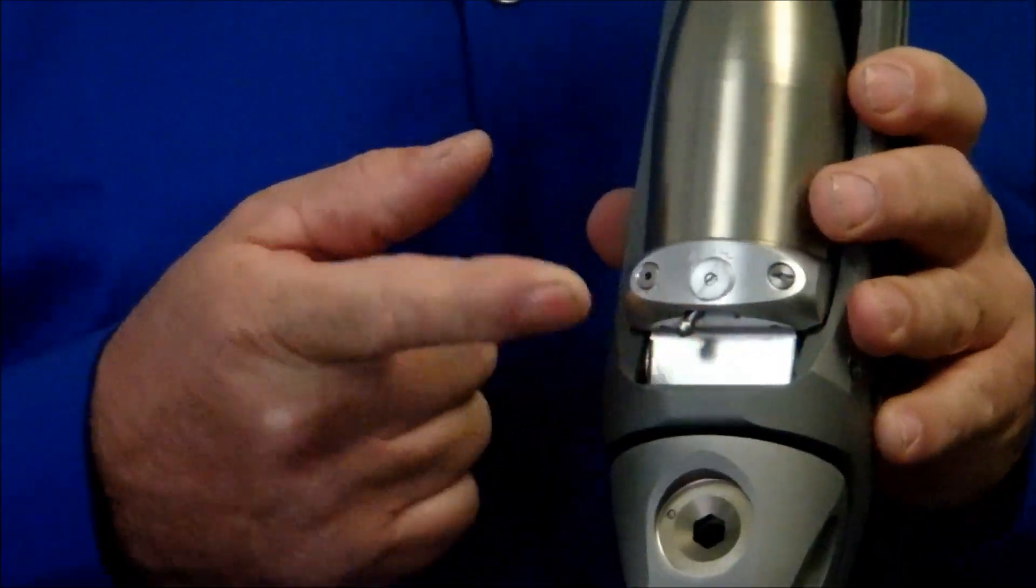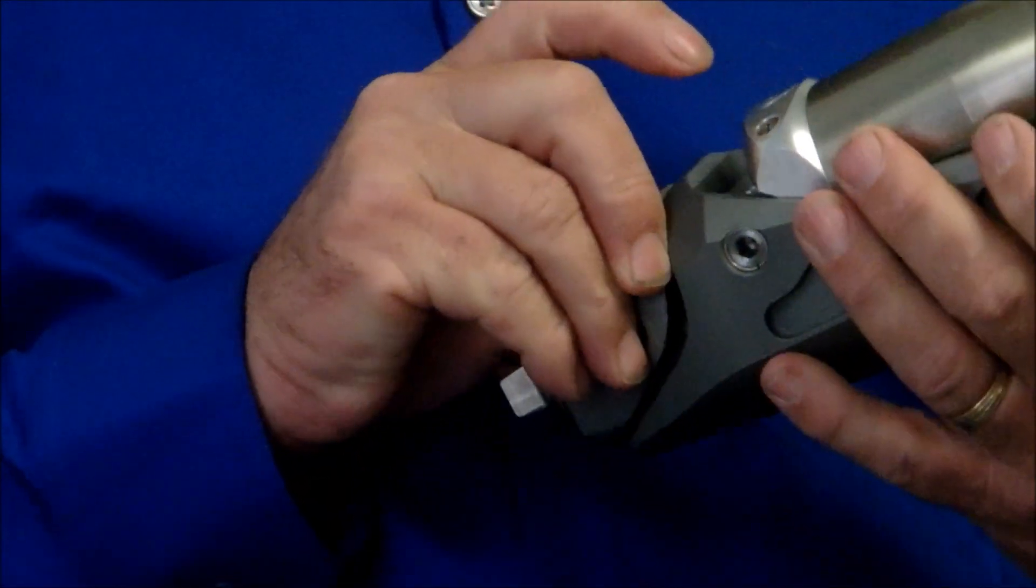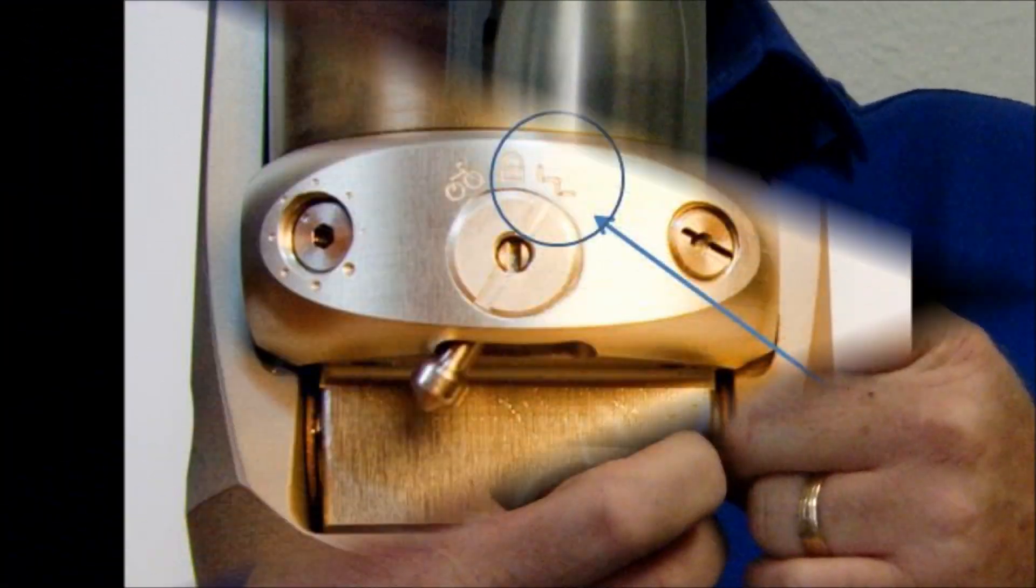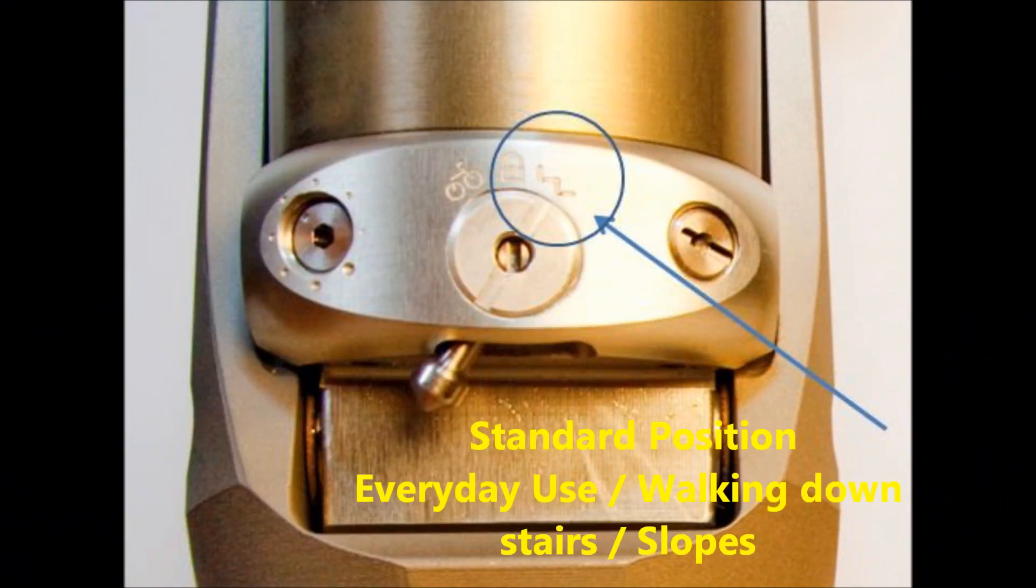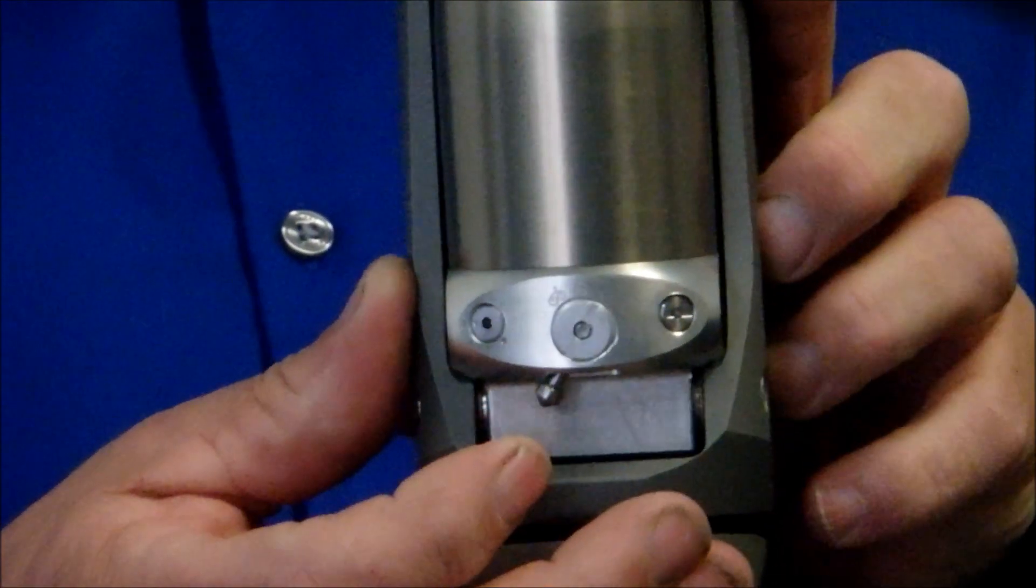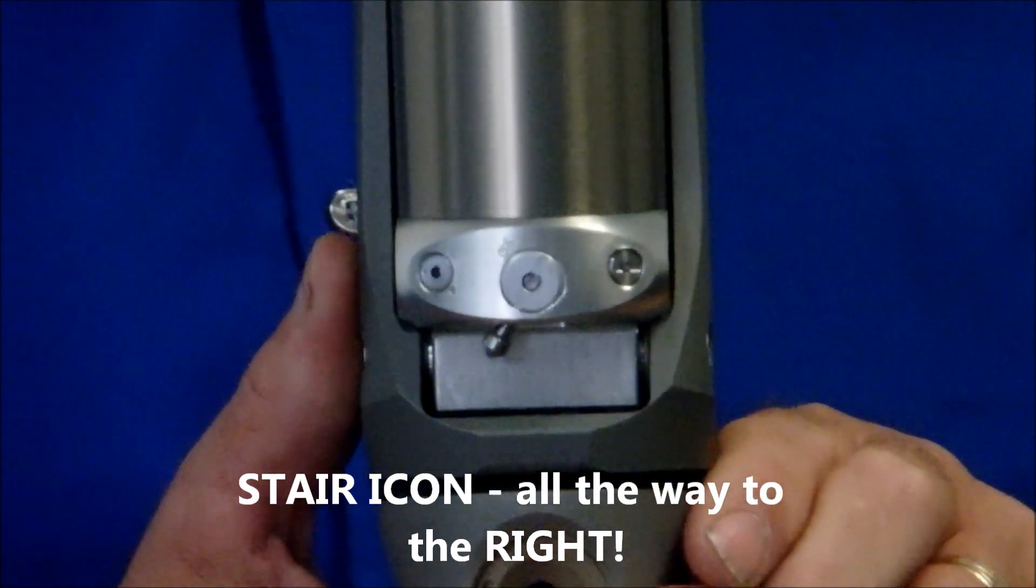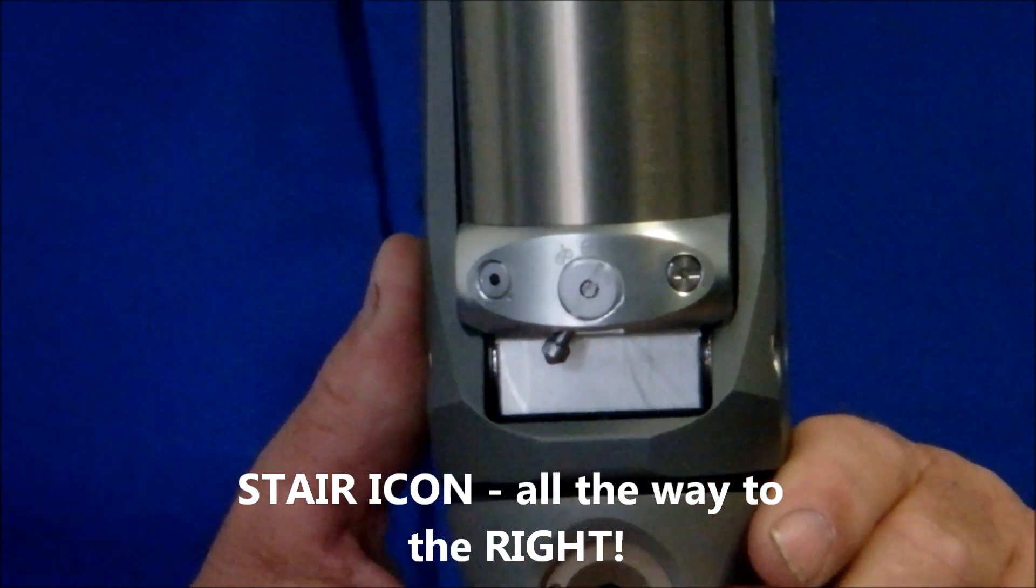Now, all the way to the right, it has a little stair icon. It's very hard to see, but a little tiny stair. That position is your standard position for walking downstairs, slopes, etc.